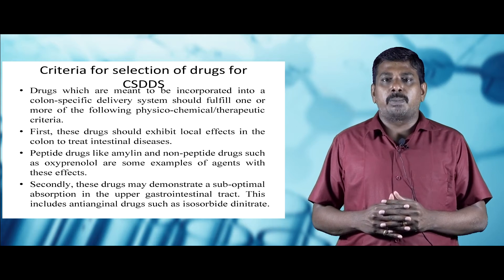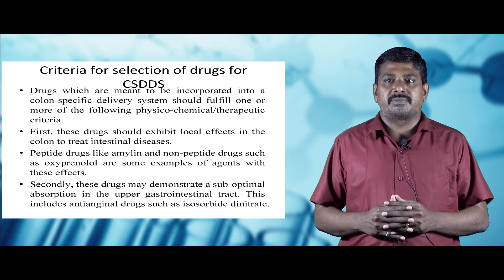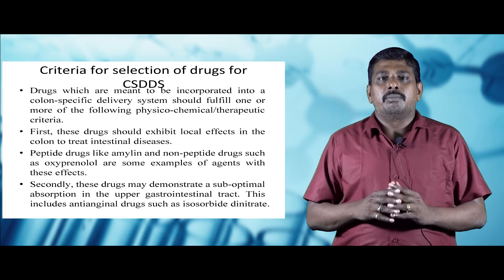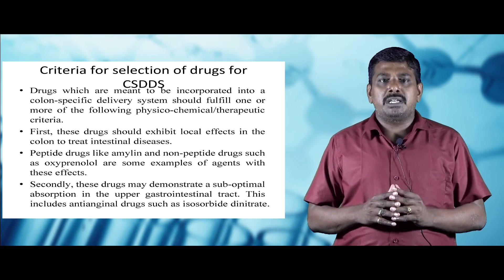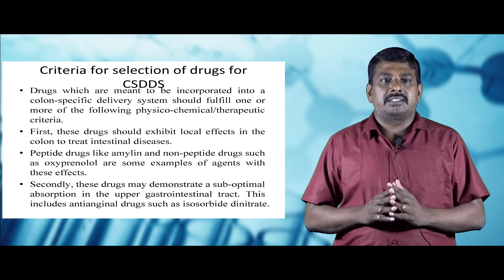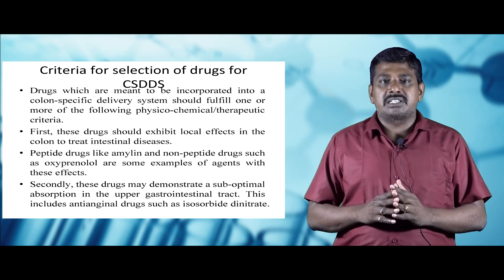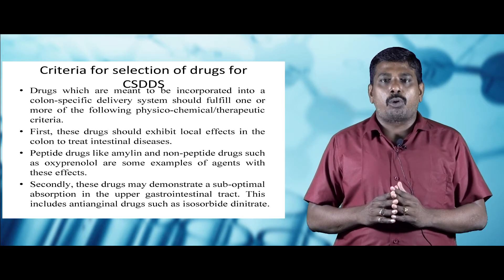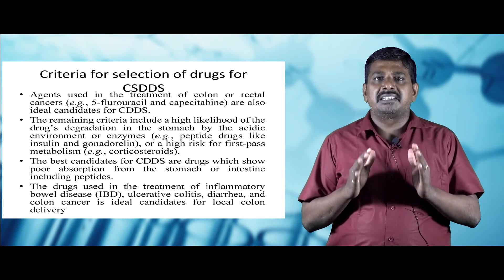First, these drugs should exhibit local effects in the colon to treat intestinal disease. Peptide drugs like amylin and non-peptide drugs such as oxyprinol are examples. Secondly, these drugs may demonstrate suboptimal absorption in the upper gastrointestinal tract — this includes anti-anginal drugs such as isosorbide dinitrate.